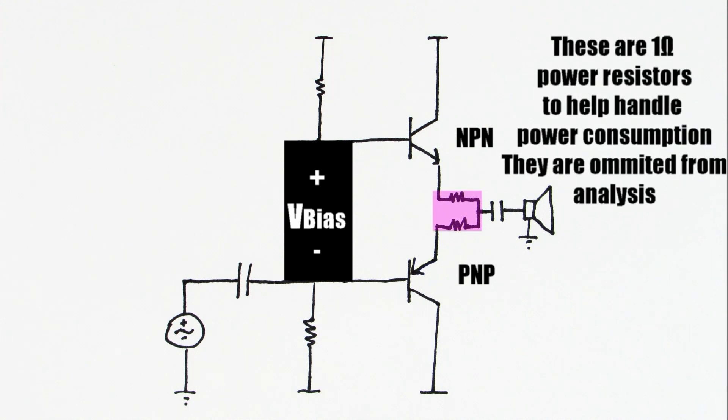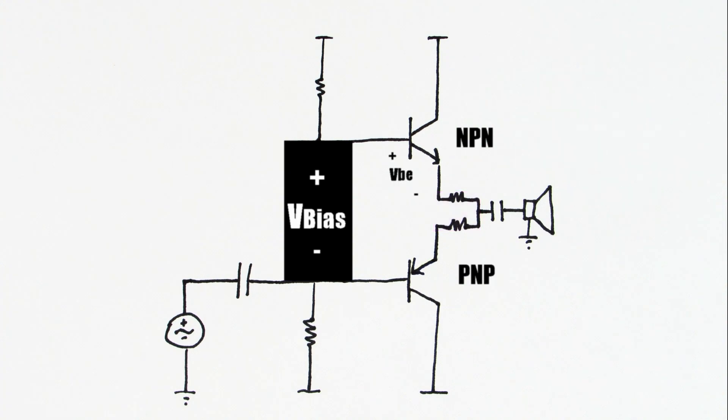To do this we need to overcome the turn on voltages of the transistors. We have the base emitter voltage of the NPN and the emitter base voltage of the PNP. This bias needs to overcome these two voltages which in my case are about 0.7 volts and that's a typical value for silicon transistors.